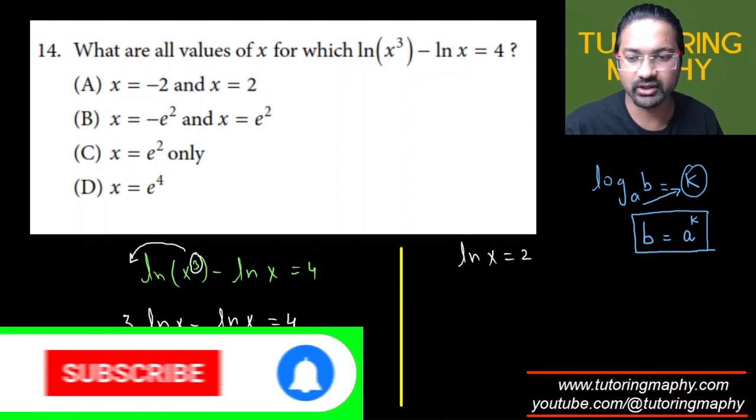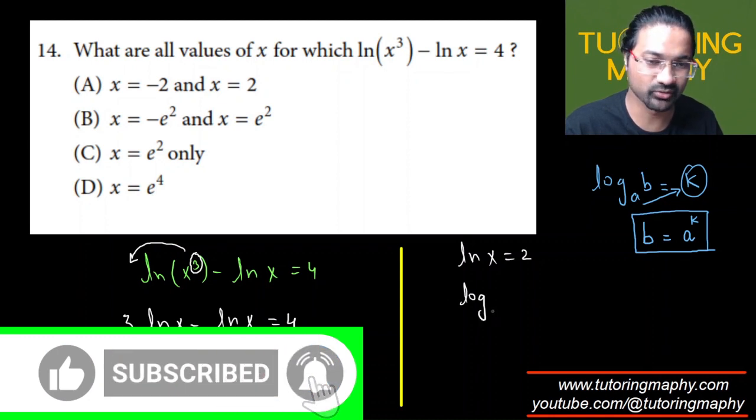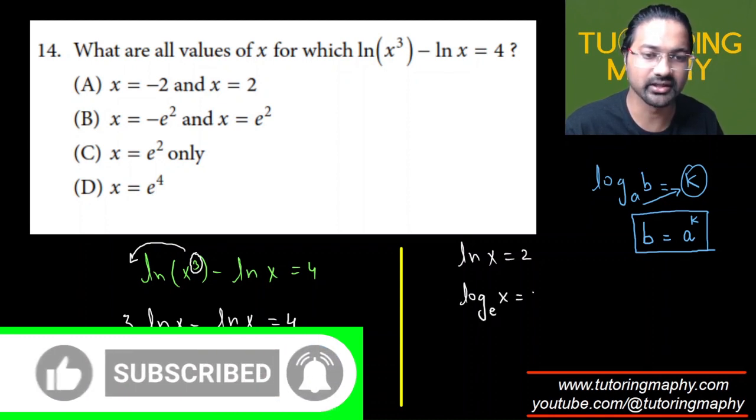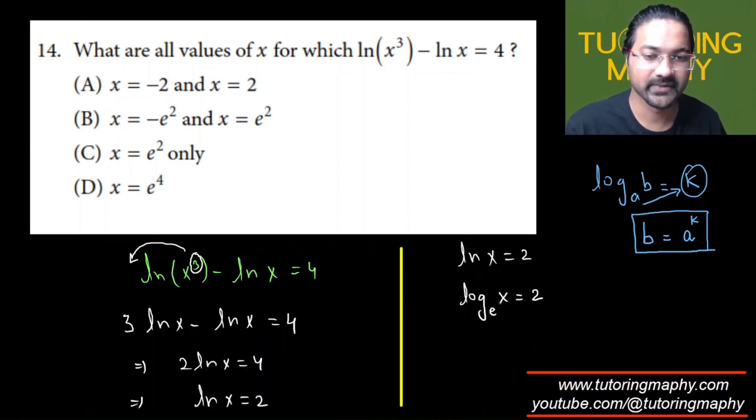Likewise, since this is a natural log, and if it helps you understand this even better, although we don't really write like log of base e is equal to 2, here the base is e and we need to find x. So based on the blue thing, x remains here, e is thrown over on the other side such that this 2 raises in its power. So the value of x is e².